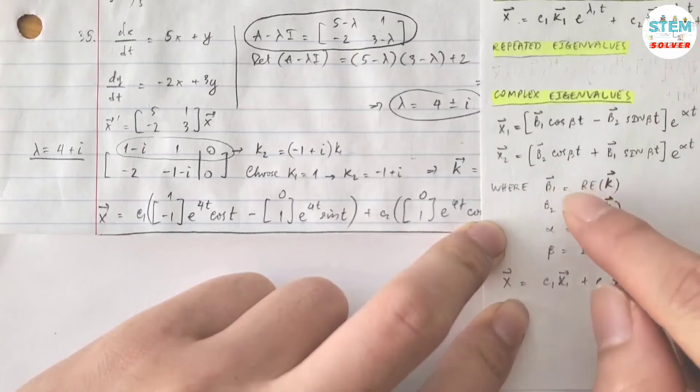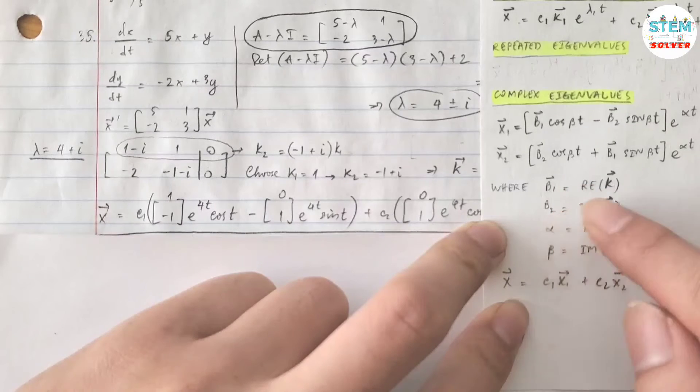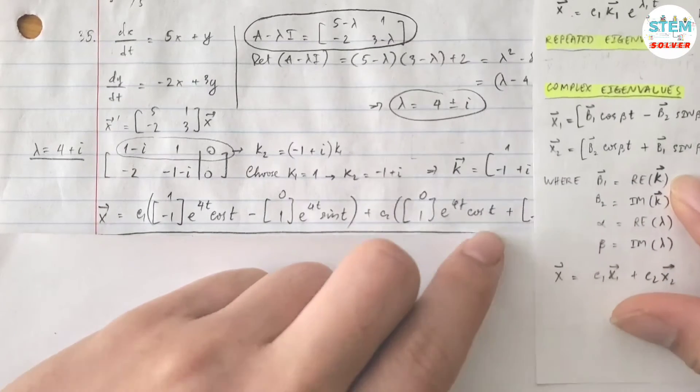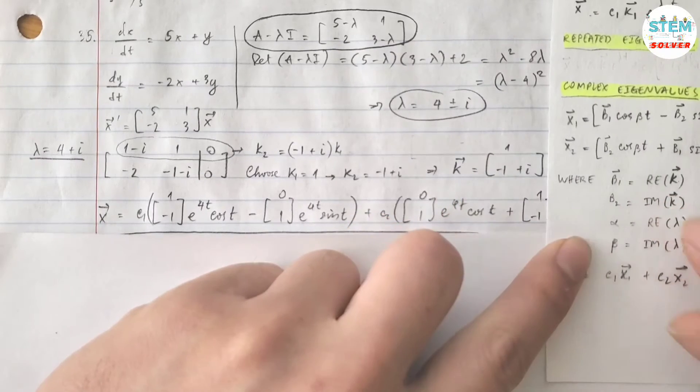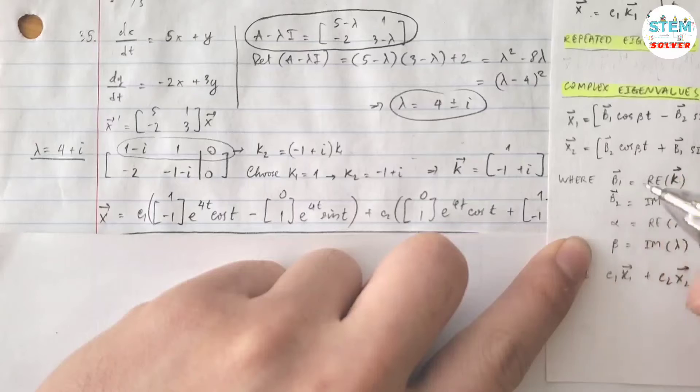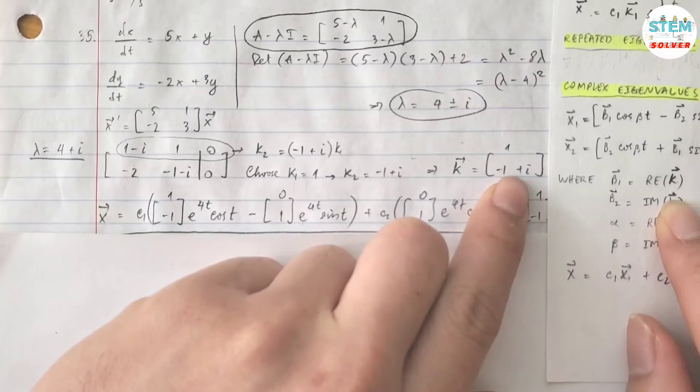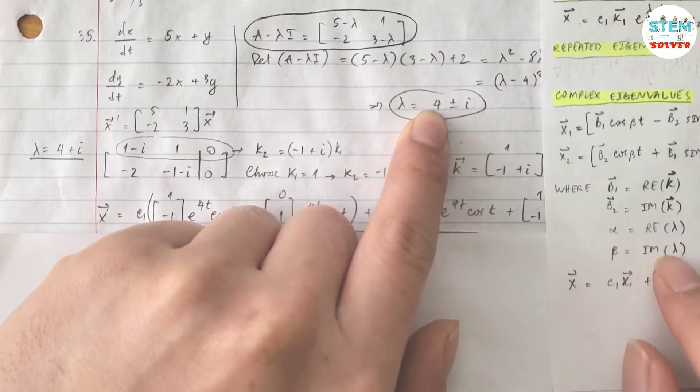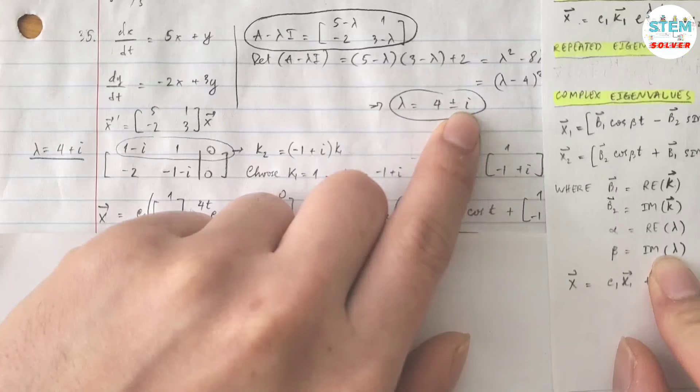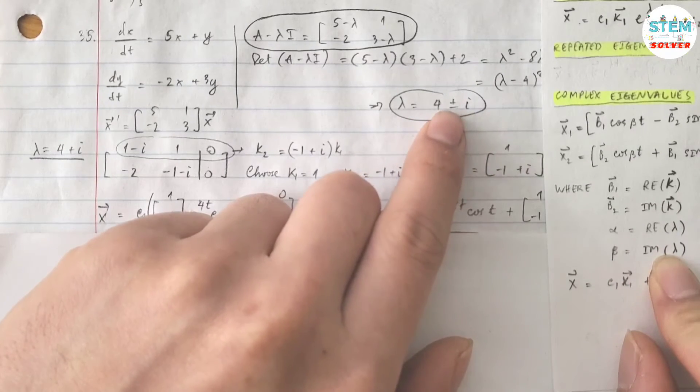What is b1? What is vector b1? Vector b1 is the real part of vector k, which is [1, negative 1] in this case. b2 is imaginary part of vector k which is [0, 1]. Alpha is real part of lambda which is 4. Beta is imaginary part of lambda which is 1. Don't take the sign.